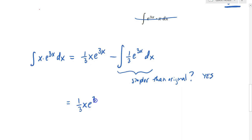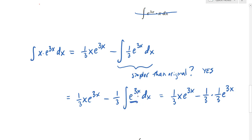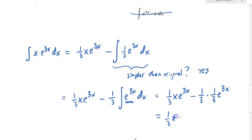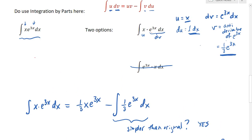Continuing, we have one third x e to the 3x. Bringing the one third constant to the front of the integral and taking the antiderivative of e to the 3x gives one third times one third e to the 3x. So the final answer is one third x e to the 3x minus one ninth e to the 3x plus c. This is an example where integration by parts helps us find the integral where other methods fail.